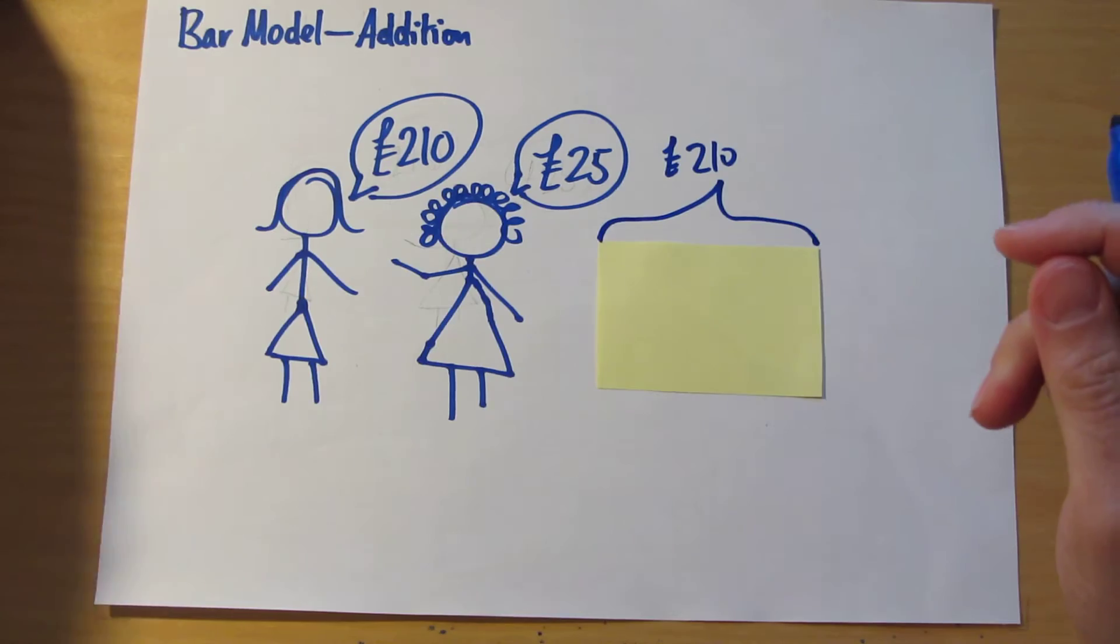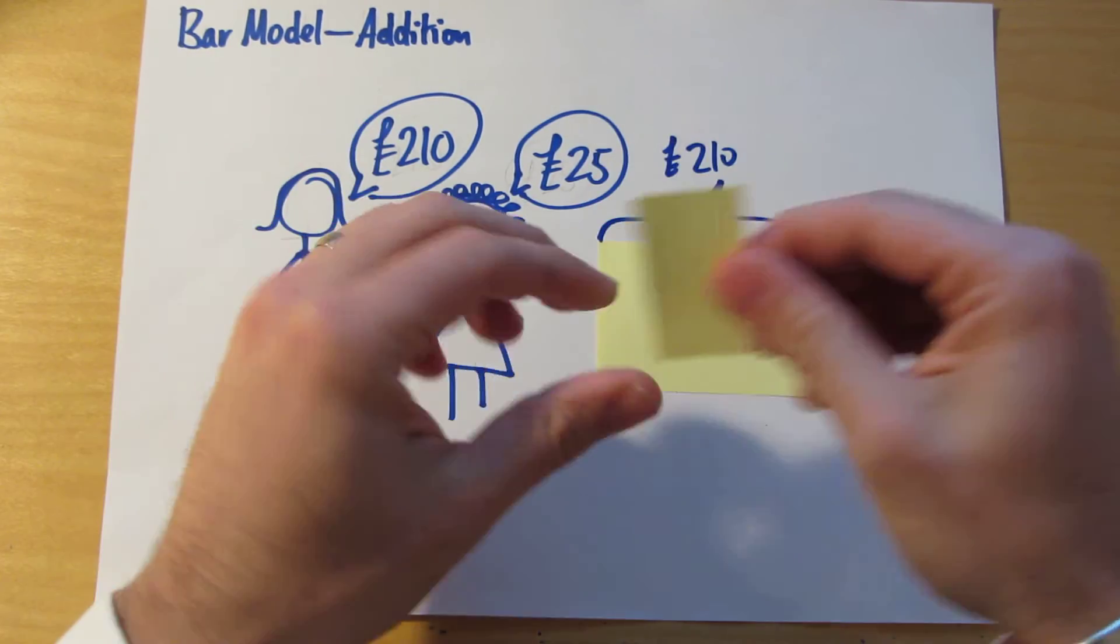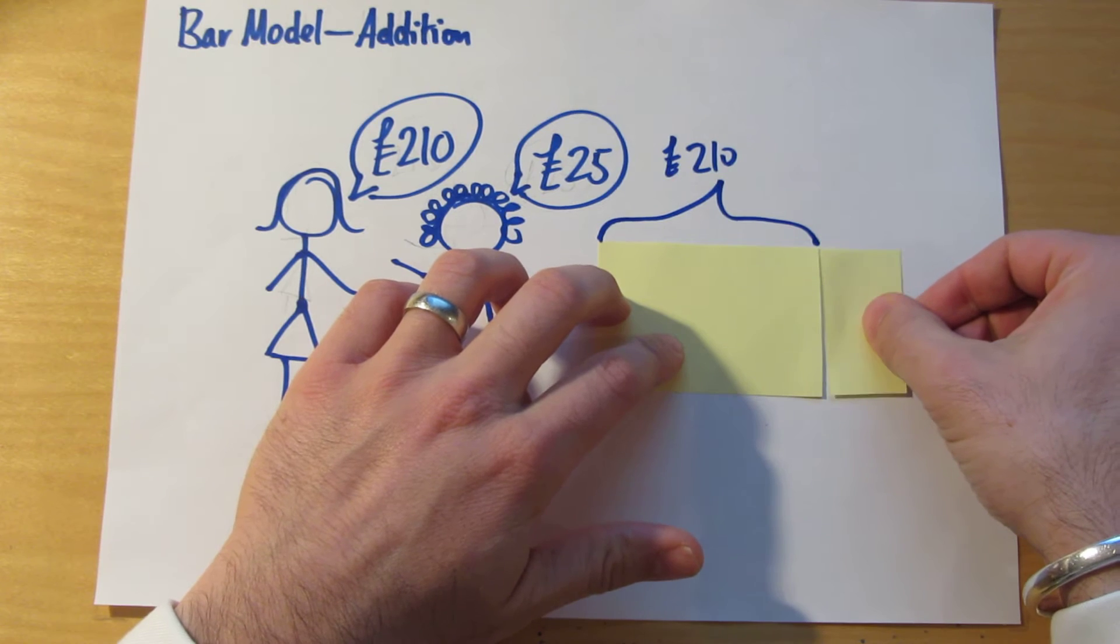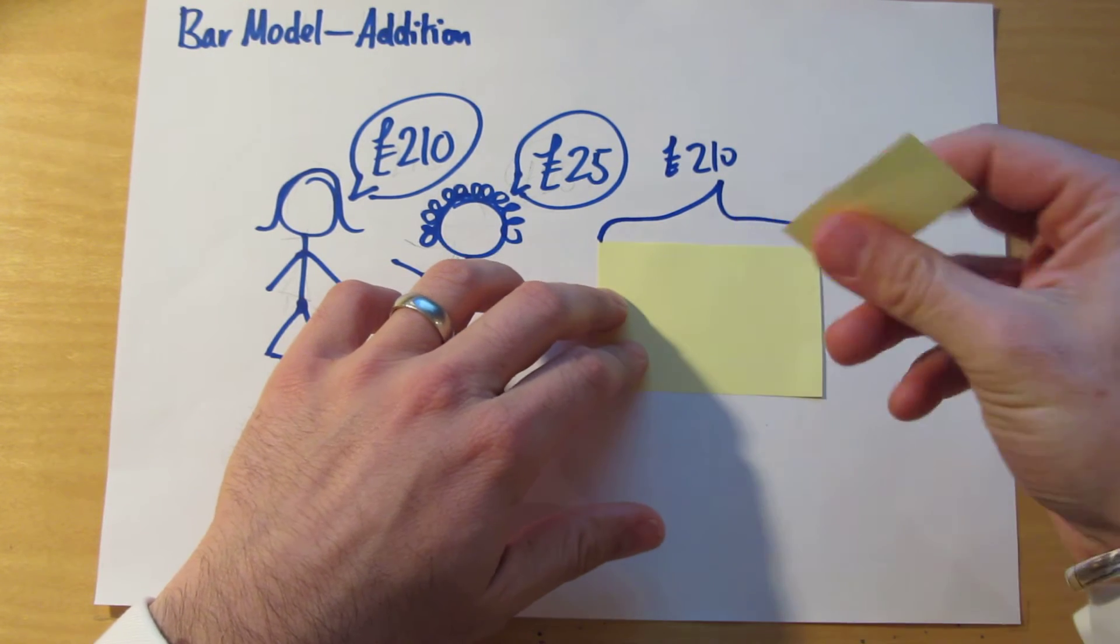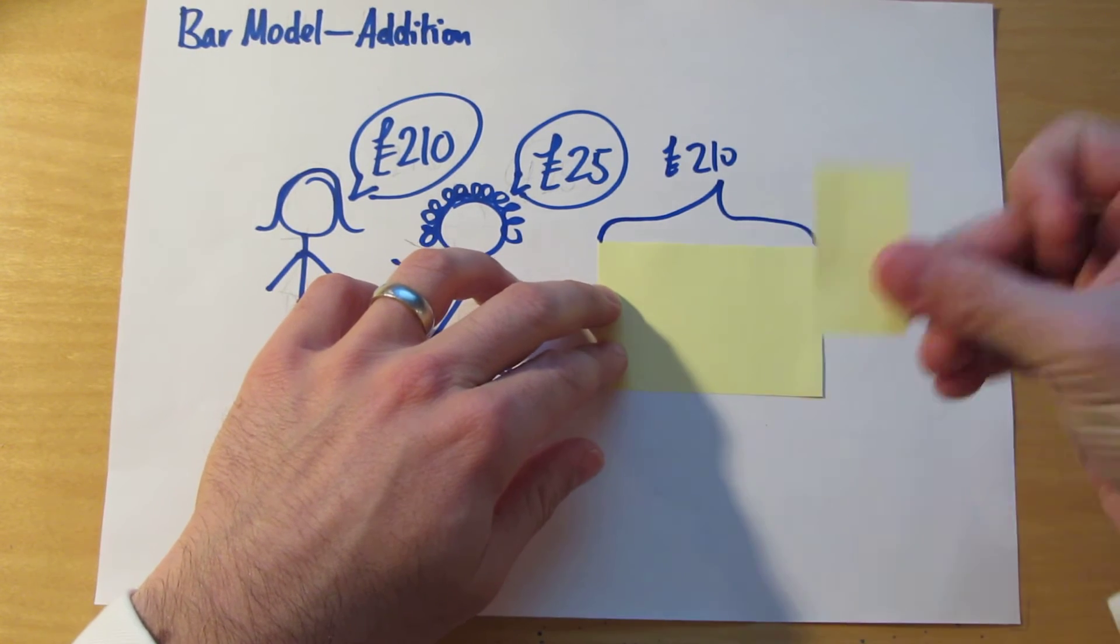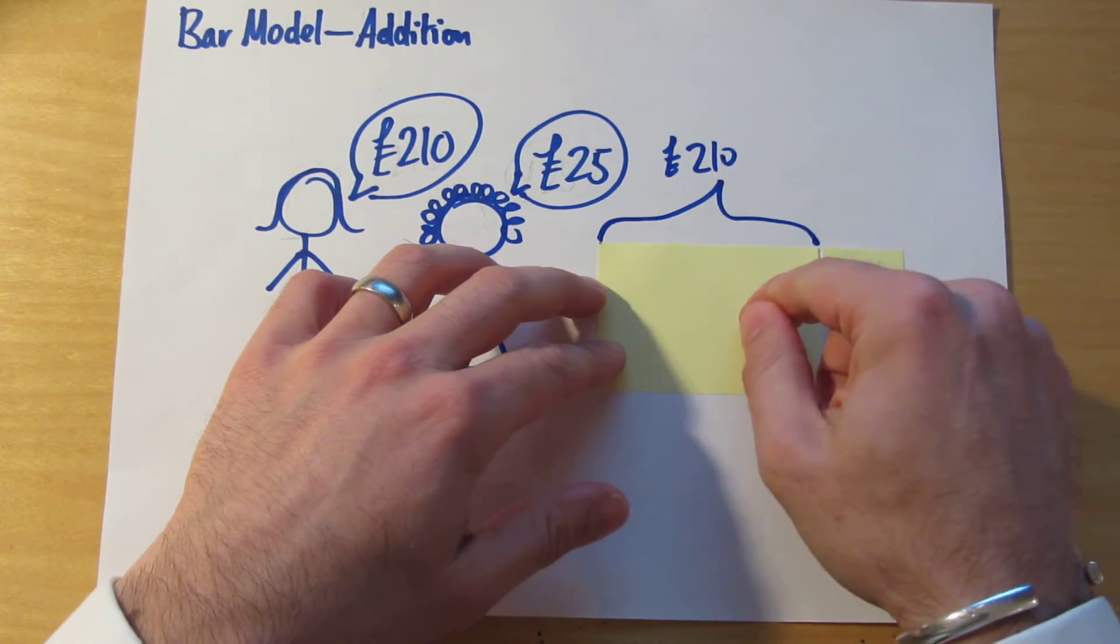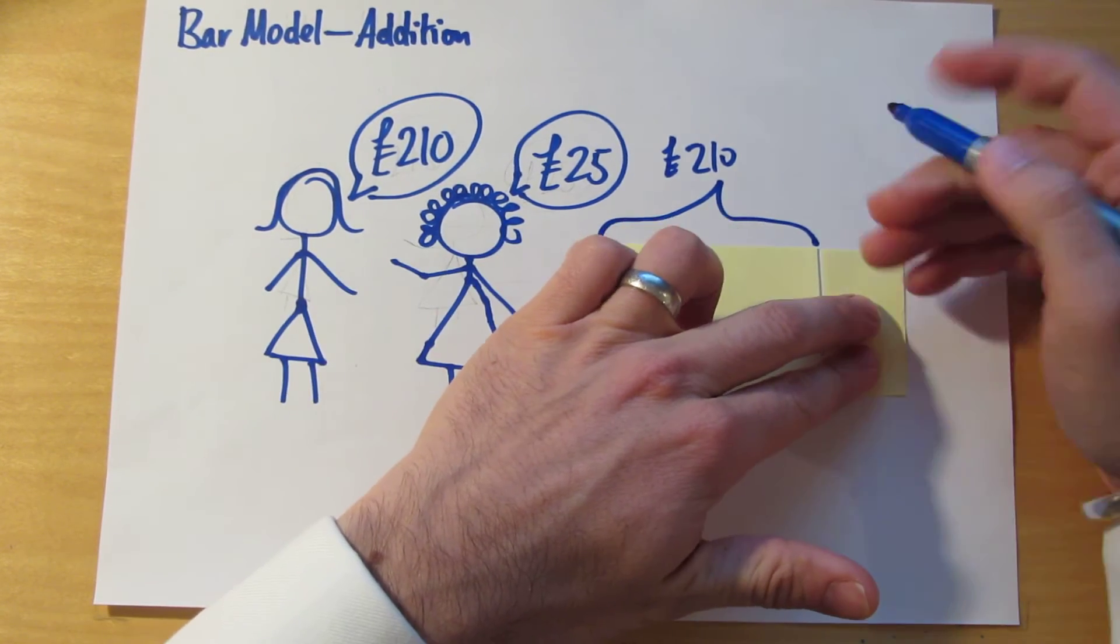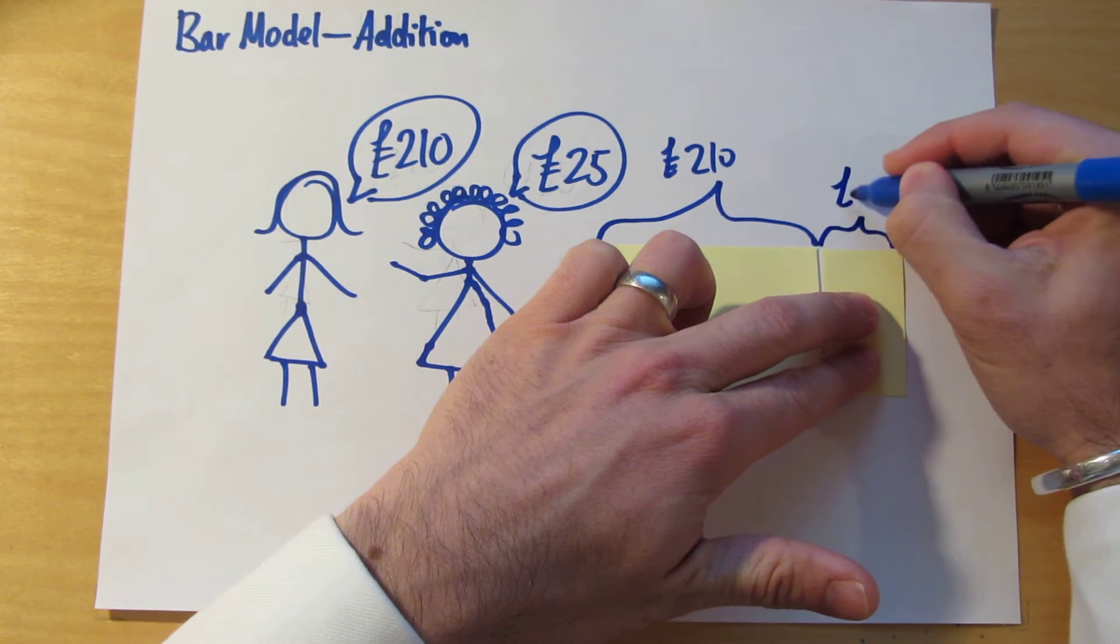Then her gran comes along on her birthday and gives her some more money. I've got another rectangle here to represent the extra money that her gran gave her. You can see that I've deliberately drawn it or cut it smaller than the initial rectangle, because I know that if this is £25, it's going to have to be smaller, quite a lot smaller than £210. This is £25.